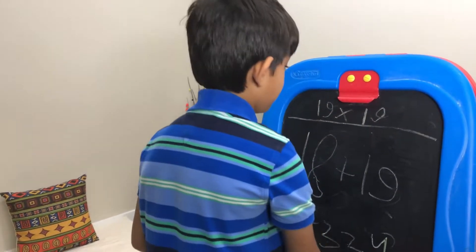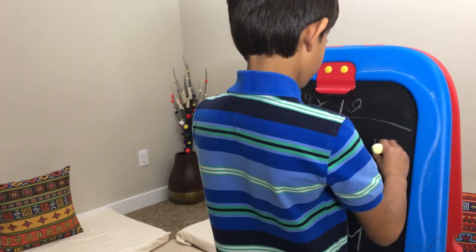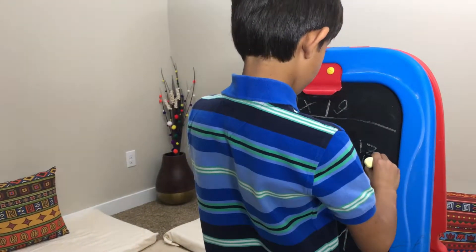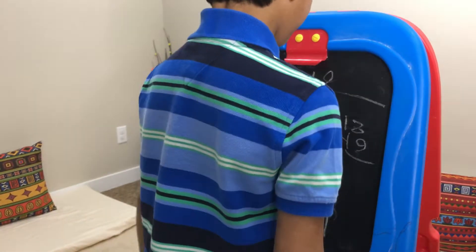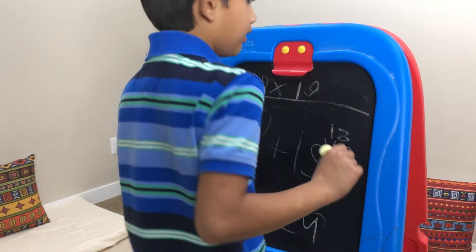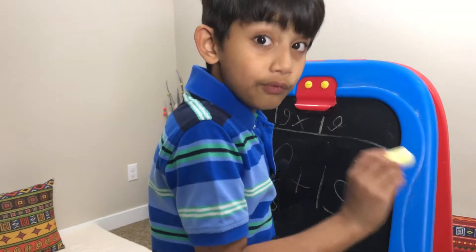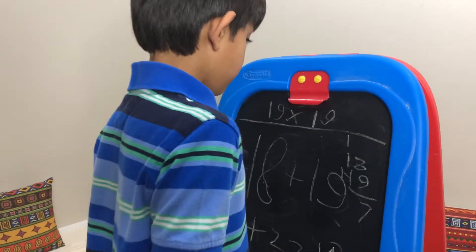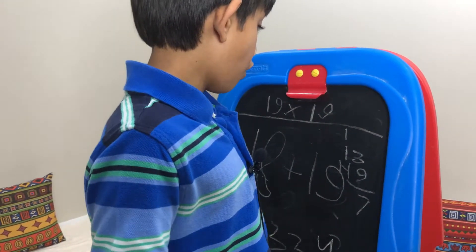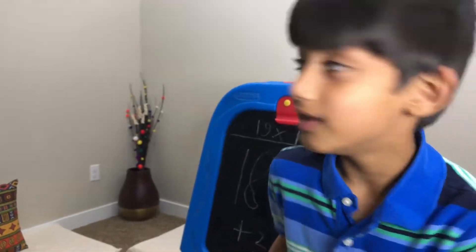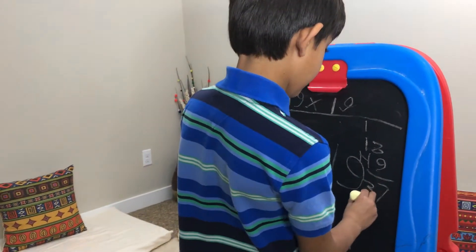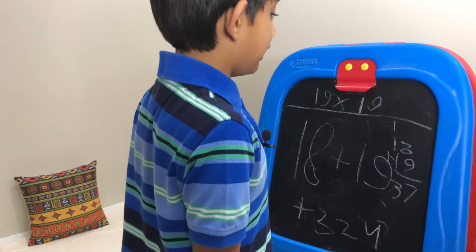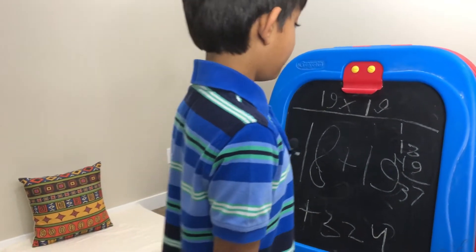So 18 plus 19 plus 324 is what we need to solve. Let's figure out 18 plus 19 first. We know that 8 plus 9 is 17 — write a 7, and the 10 goes into the tens place. So we add 1 plus 1 plus 1, which is 3. So 18 plus 19 is 37.